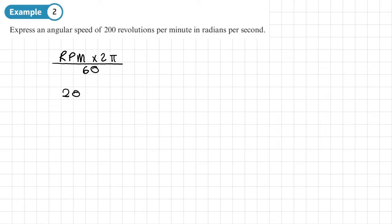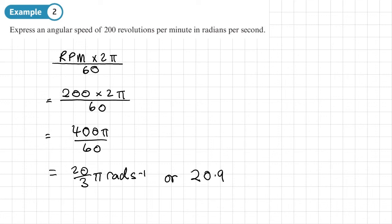So we'll do 200 times by 2 pi divided by 60. So that's going to be 400 pi over 60, which simplifies to 20 over 3 pi radians per second. Or if we change that to a decimal, three significant figures would be 20.9 radians per second.